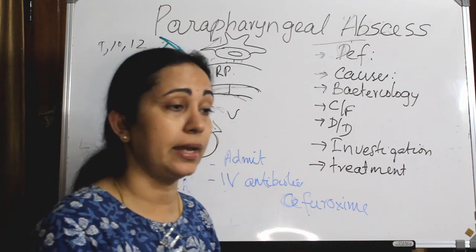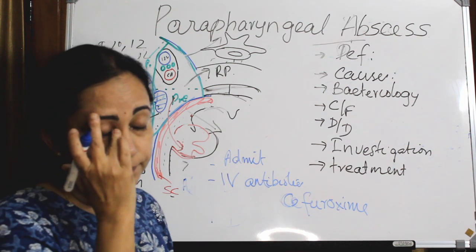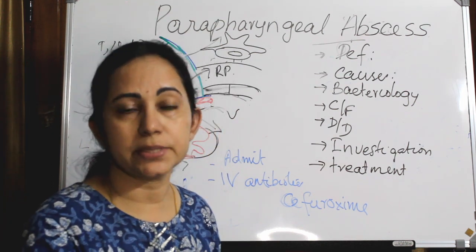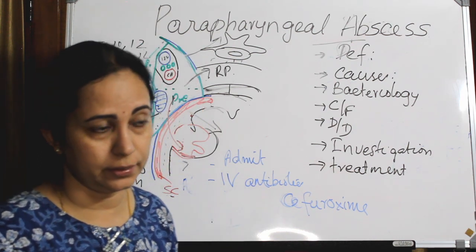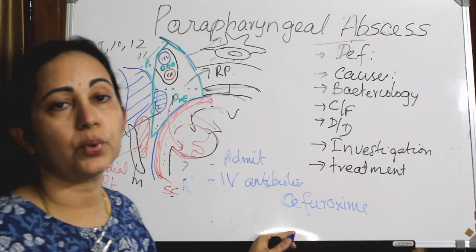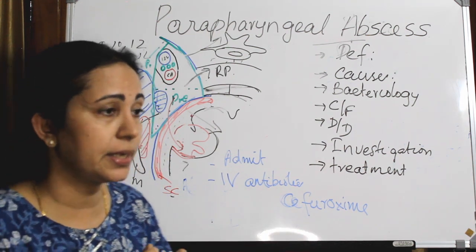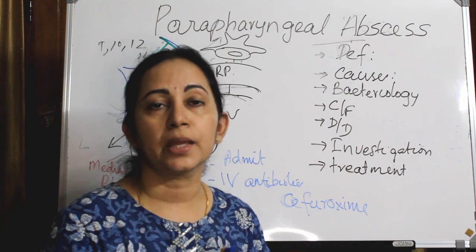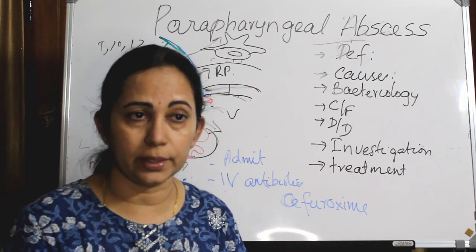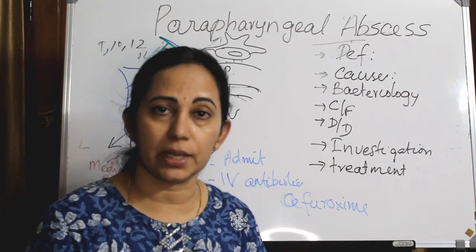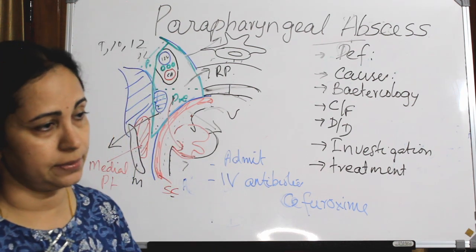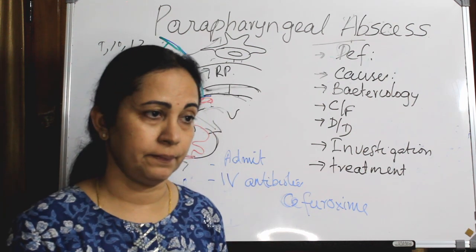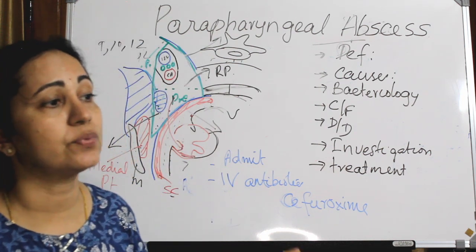If there is an intraoral or external bulge, the pus can be aspirated and sent for culture and sensitivity. Once the report is available, antibiotics can be changed to the specific appropriate agent according to the culture and sensitivity result. Surgery is indicated when conservative management is insufficient.